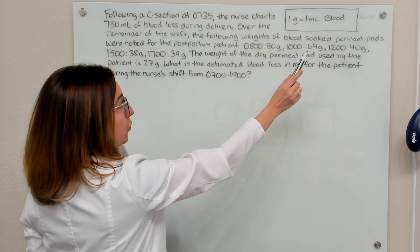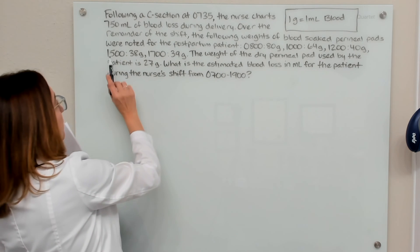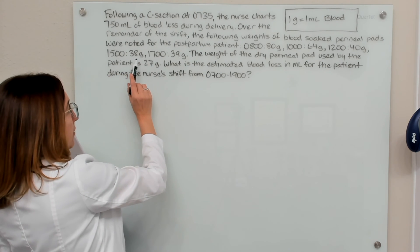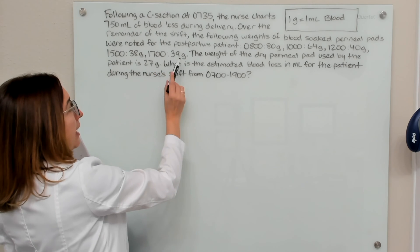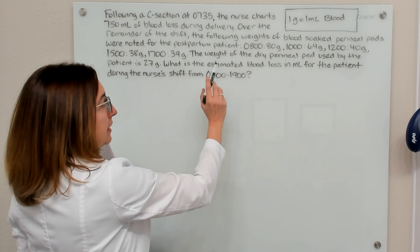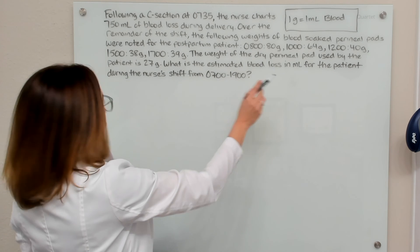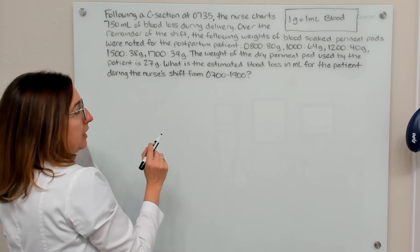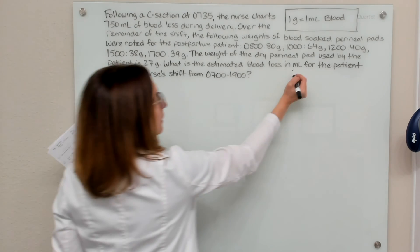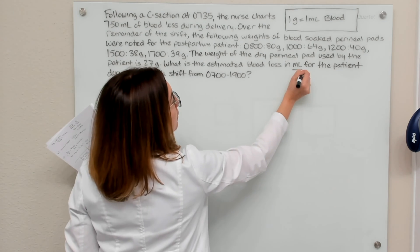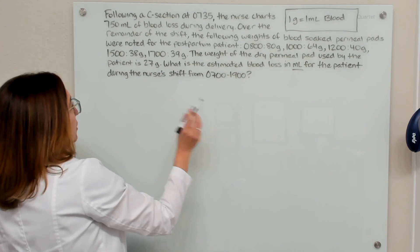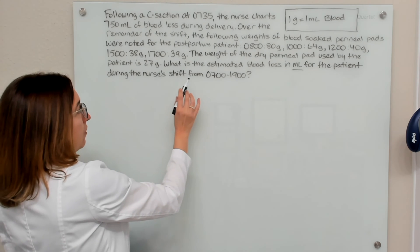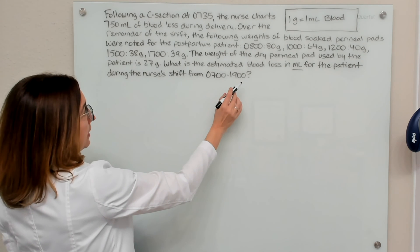At noon, 40 grams. At 1500, 38 grams. And at 1700, 39 grams. The weight of the dry perineal pad used by the patient is 27 grams. What is the estimated blood loss in milliliters for the patient during the nurse's shift from 0700 to 1900?